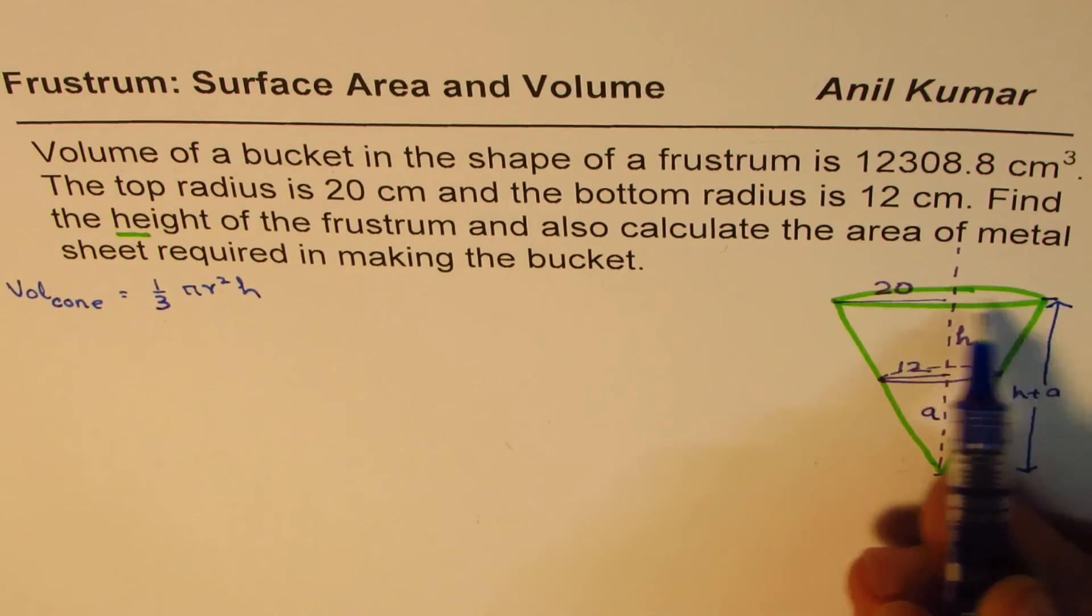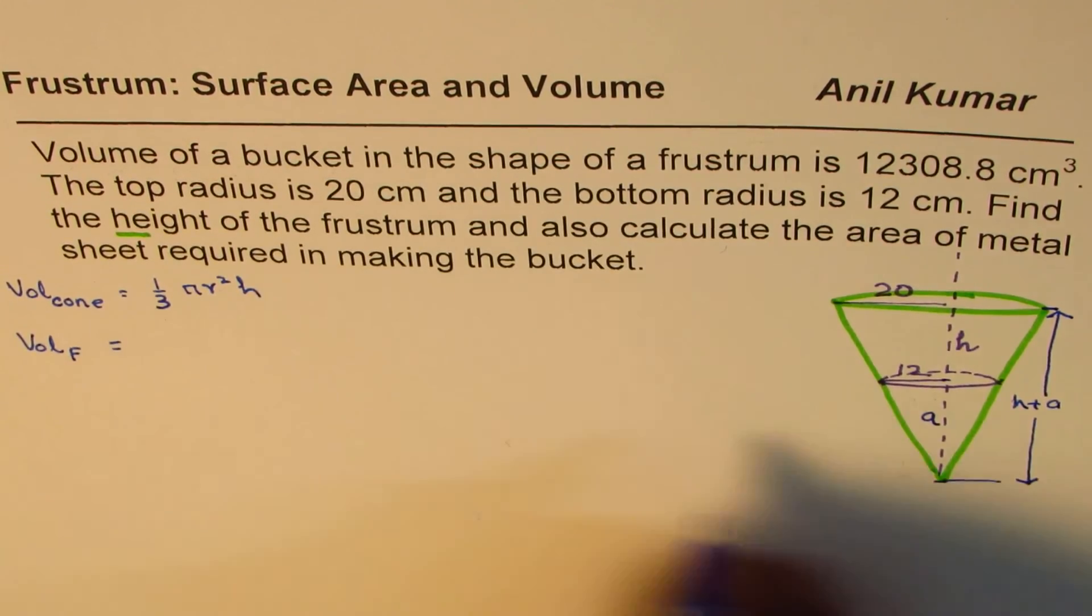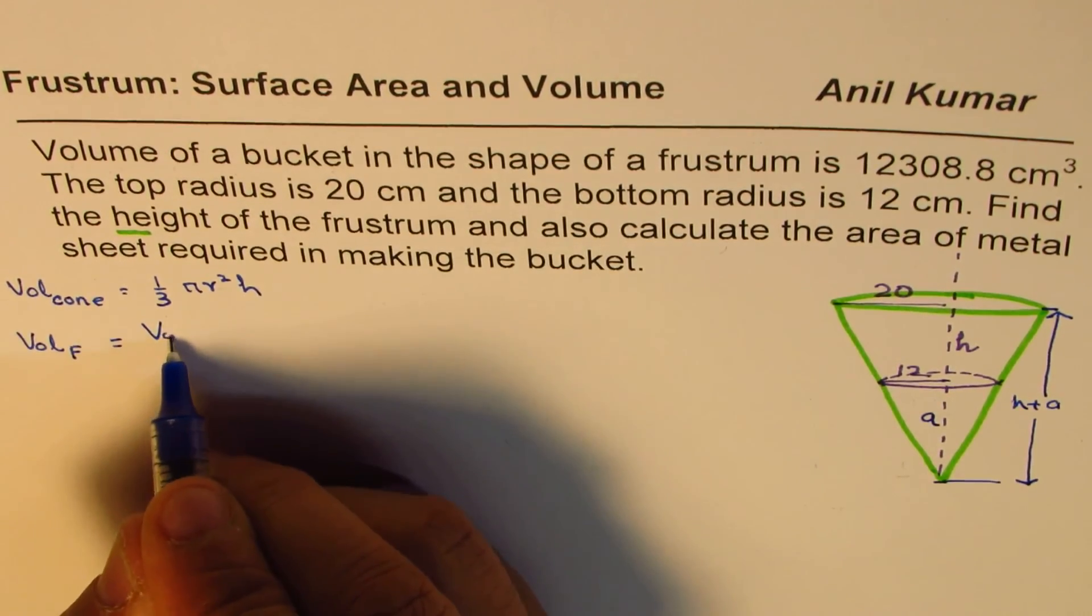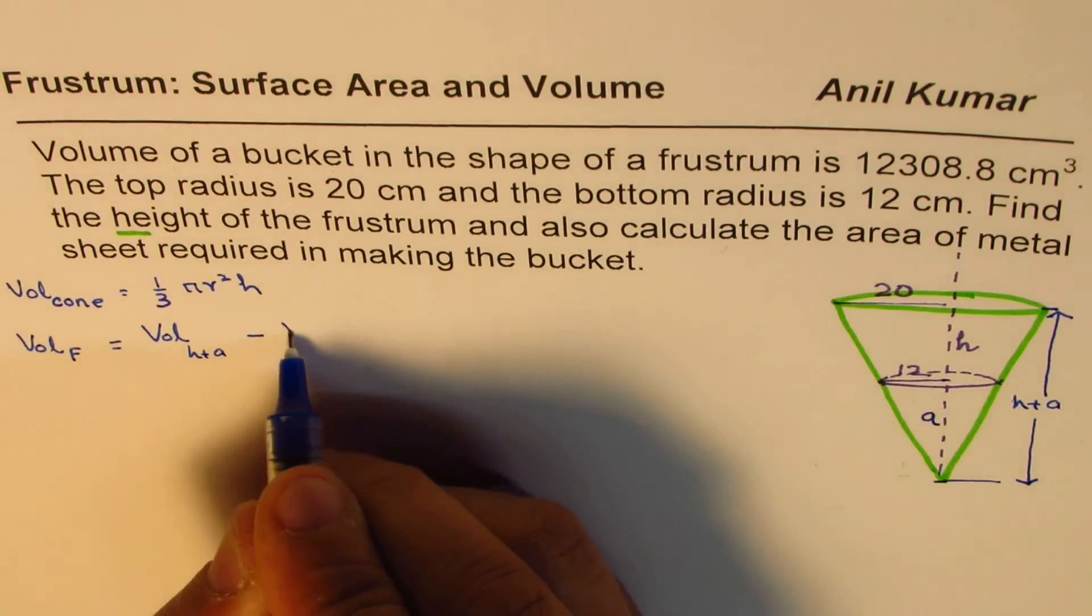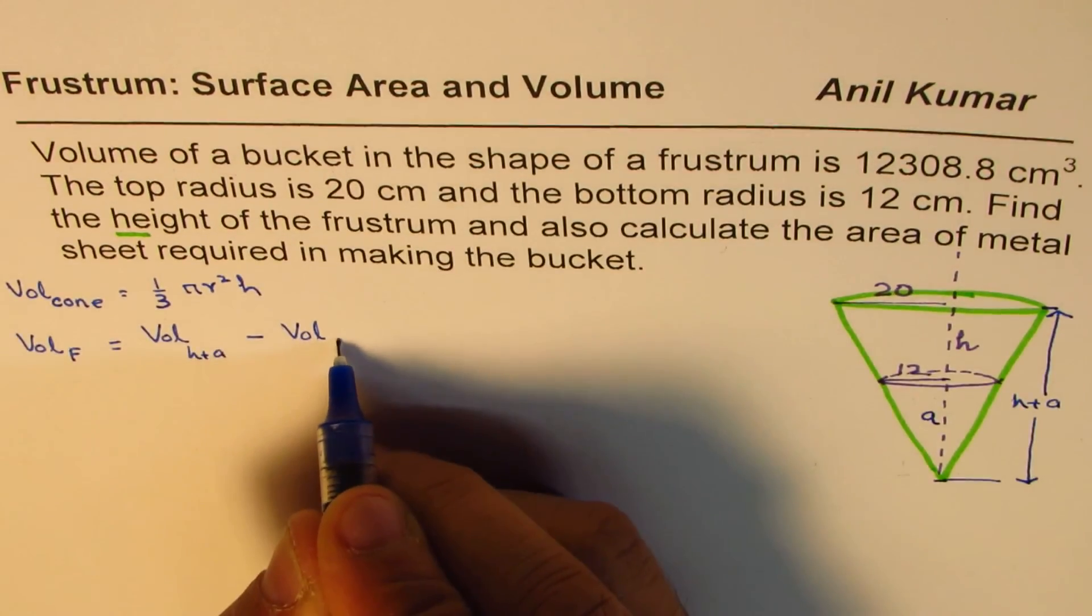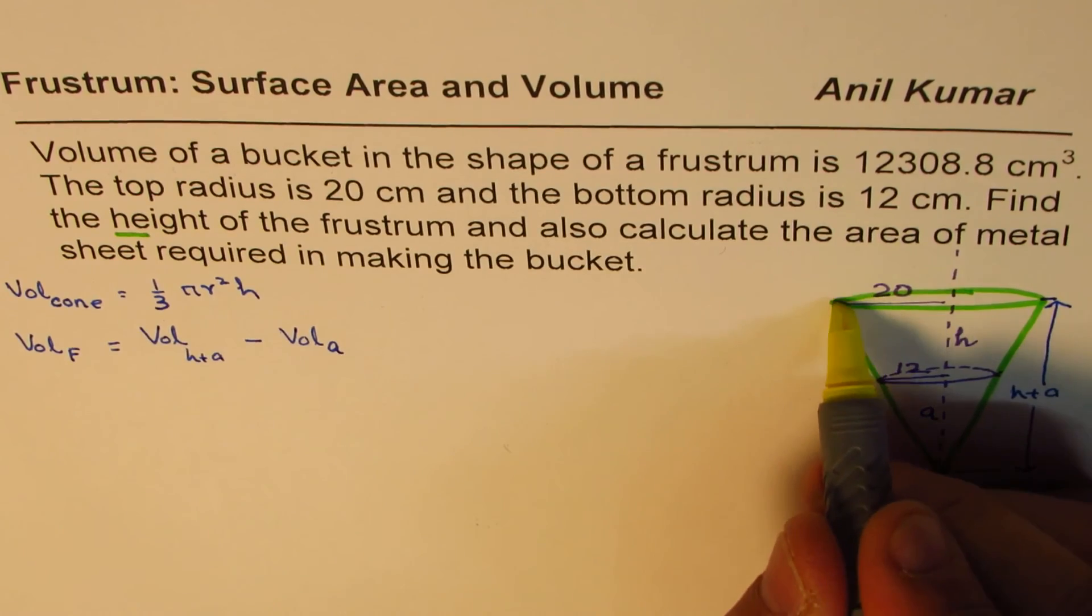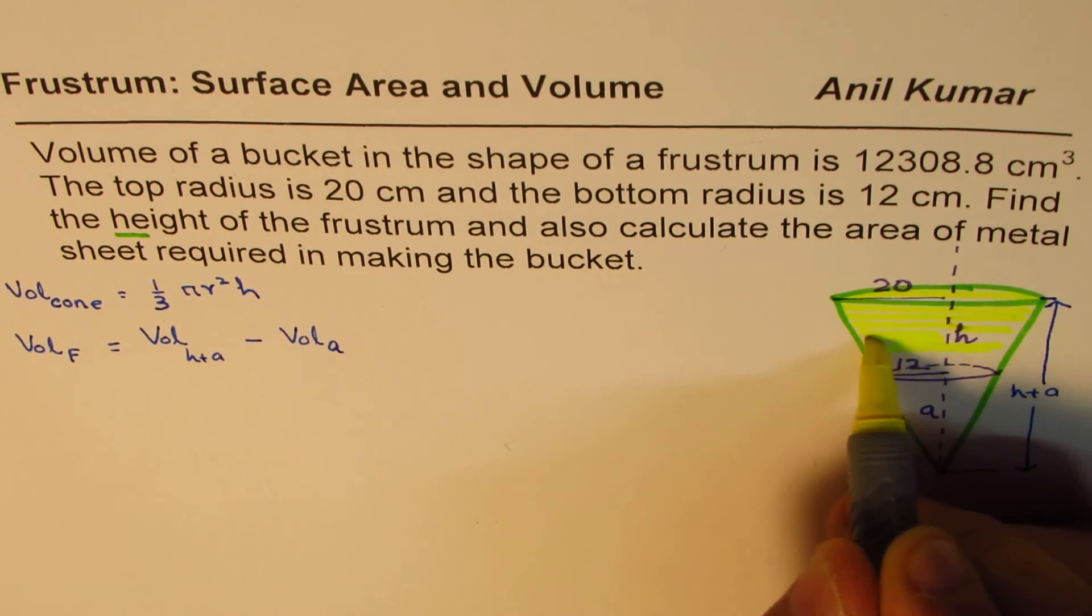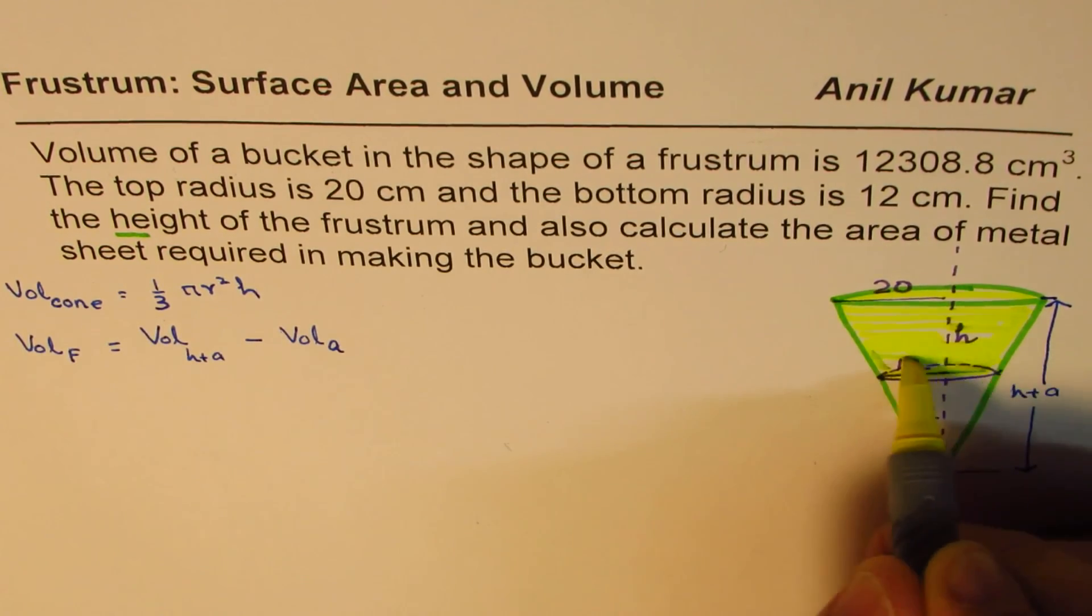Now, if I'm talking about the frustum, then volume of the frustum F equals the volume of the cone. There are two cones now. Volume of the big cone, which has the height of H plus A, minus volume of the small cone, which has the height of A. So that is what we are interested in. Our frustum is this portion. We are interested in this top portion, that's the portion.